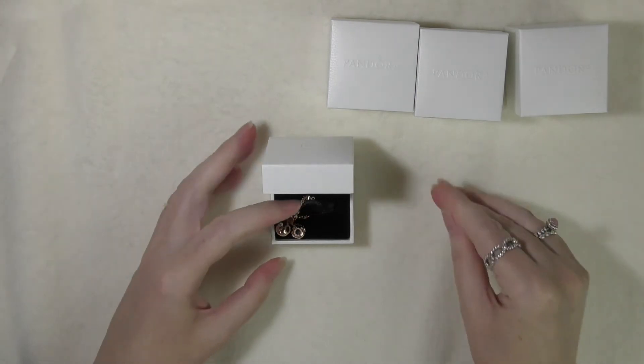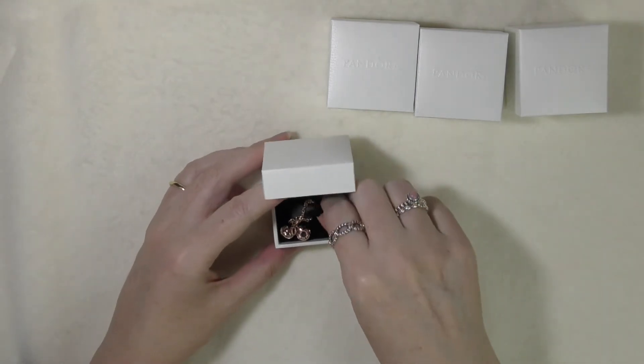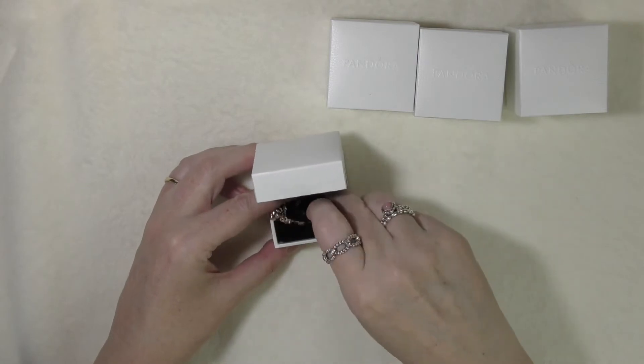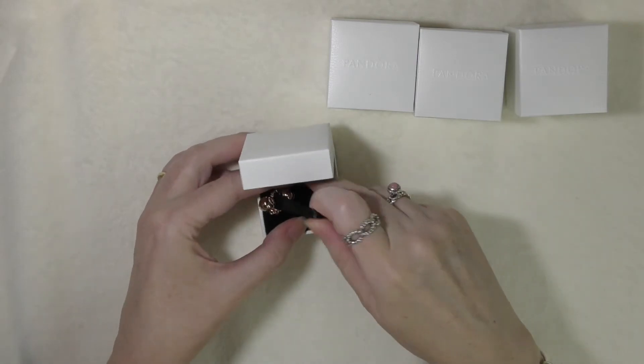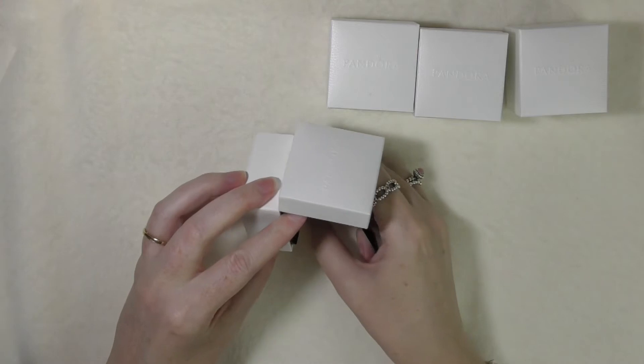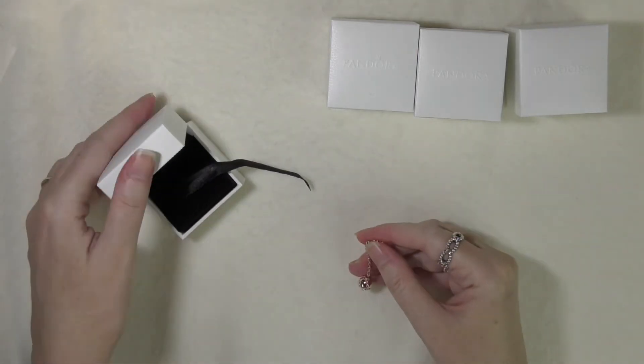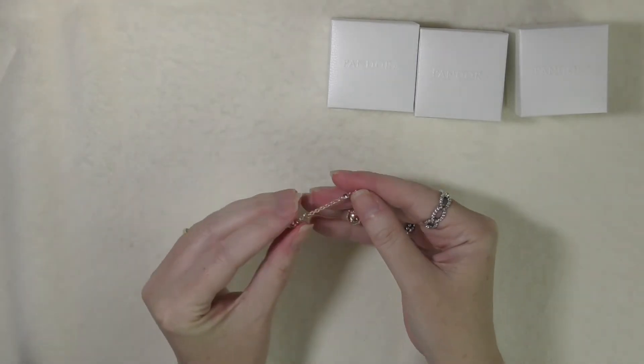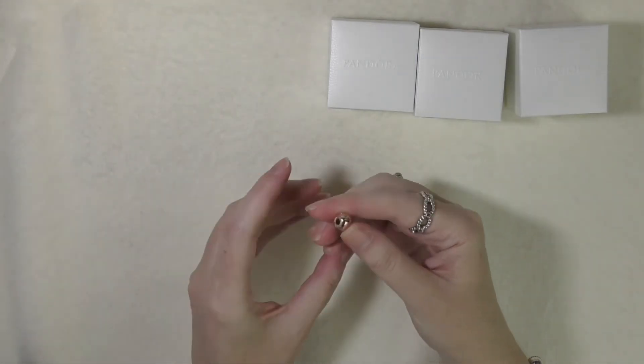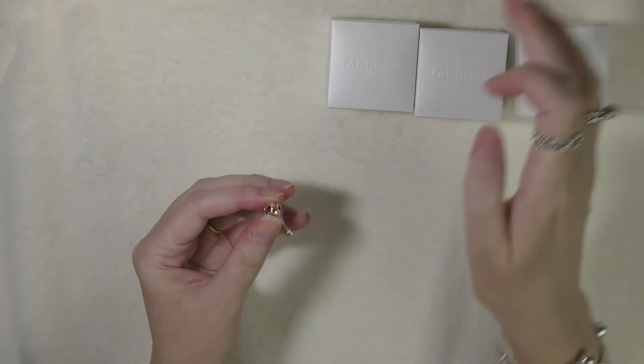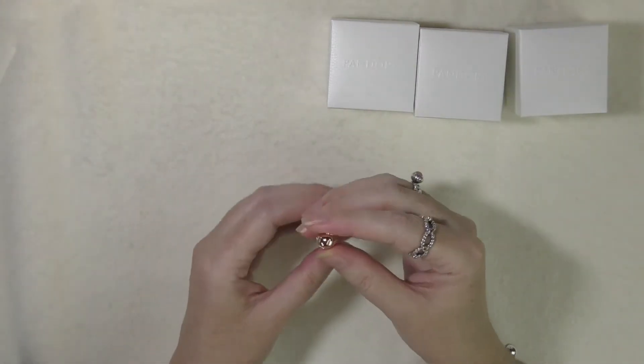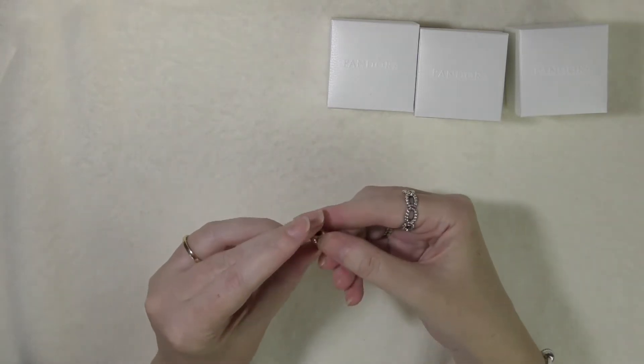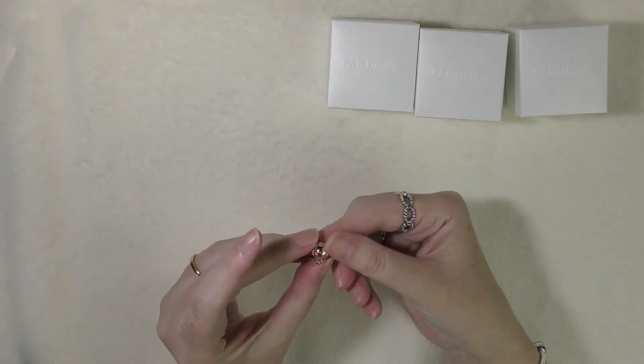Oh nice, okay this is the embossed heart safety chain in rose. Now I wasn't going to get this but I have got a reason to have it now and I realized that it was a clip on one which will be great for my smooth bracelet that I need to put it on. So it's really pretty.